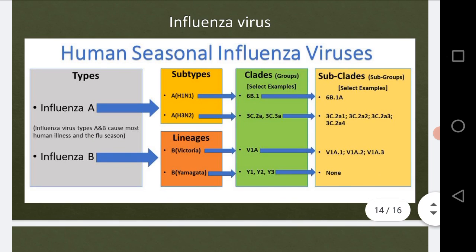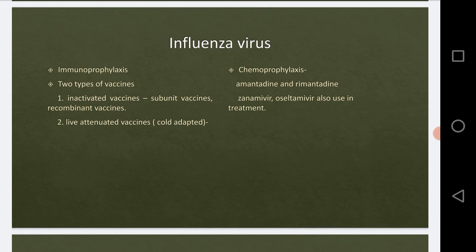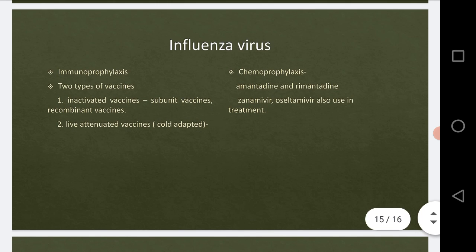Now the important topics are immunoprophylaxis and chemoprophylaxis — that is, the treatment of this virus. Immunoprophylaxis means treatment related to the immunity of the person. If we take vaccines, they play a role in our immunity, meaning if we encounter that pathogen again we have antibodies ready in our defense mechanism. This process is called immunoprophylaxis.